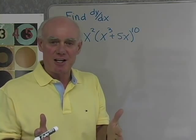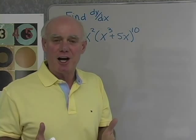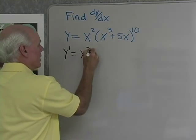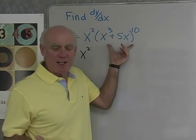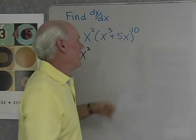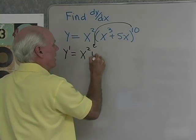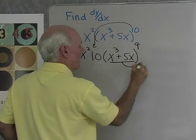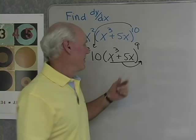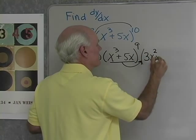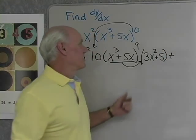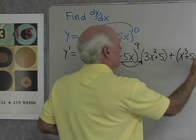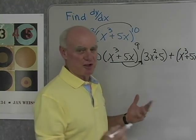I'll take the first times the derivative of the second, plus the second times the derivative of the first — and in there I'll probably use the chain rule also. So y' equals x squared times the derivative of the second: 10 times x cubed plus 5x to the ninth power, times the derivative of the base, which is 3x squared plus 5. Plus the second, x cubed plus 5x to the tenth, times the derivative of the first, which is 2x.